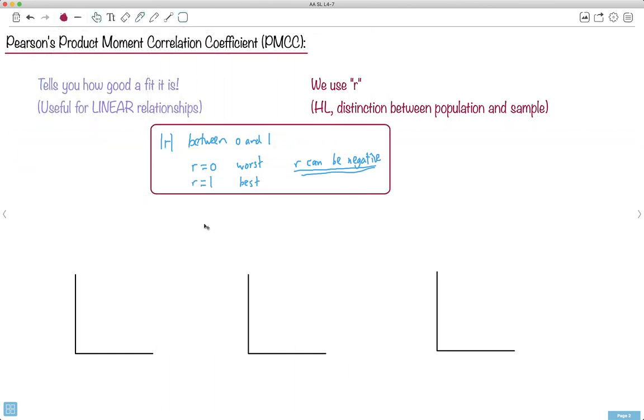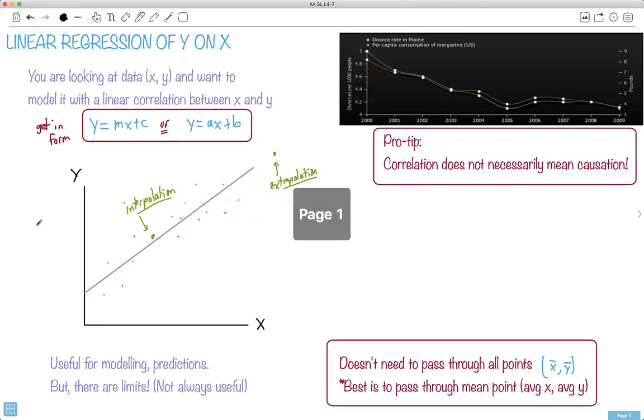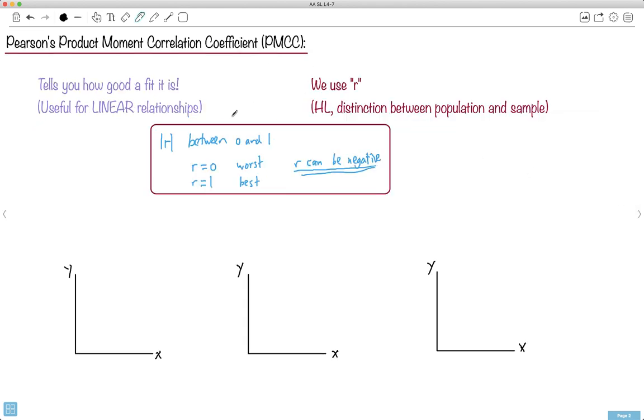R equals 0 is the worst fit. R equals 1 is the best fit. R can be negative, which just means the graph goes down. So these are the important things. We can say it's between 0 and 1. Let me show you a few different examples to try to show you what we might expect for R. When you have a fit like this, you can have some measure of how good of a fit it is. That's what this Pearson's Correlation Coefficient tells you, this R value.